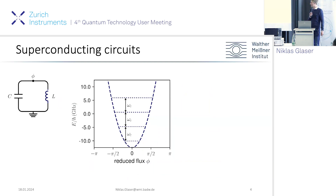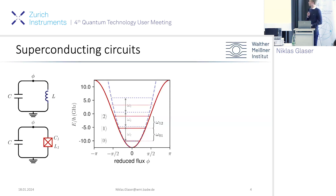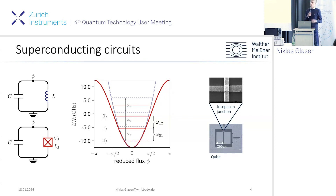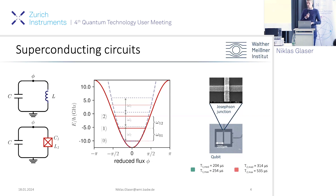We use superconducting circuits, especially transmon qubits, which are a variant of the LC oscillator with one Josephson junction in the circuit. This gives a modified potential with the 0-1 transition having a slightly different frequency than the 1-2 transition, where the 1-2 transition is reduced by the anharmonicity of the qubit. Our qubits reach nice single-qubit coherence times of T1 = 200 microseconds, with T2 reaching almost two times T1 in best cases.